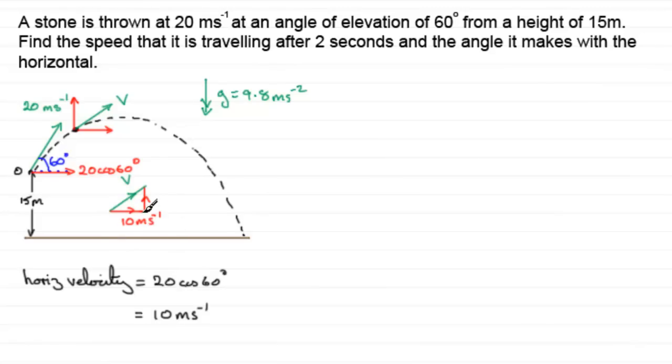But what about this vertical component? Why don't we call it v1? We've got this one is 10 meters per second. But if we're to get v1, I've got to consider the vertical motion. So let's just put this up here, consider vertical motion.